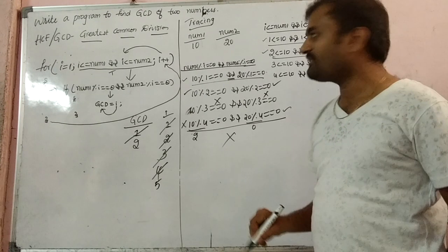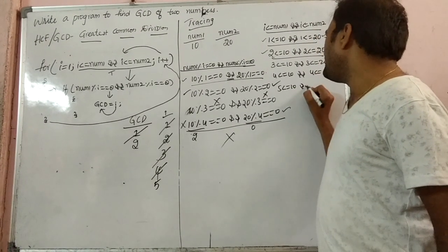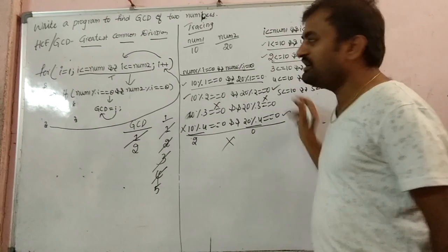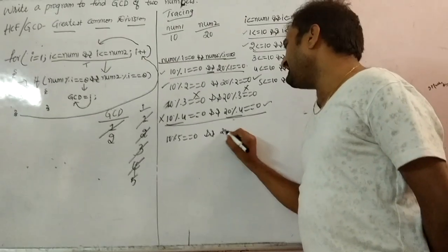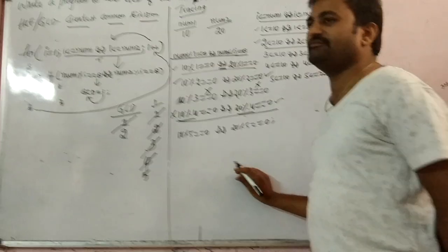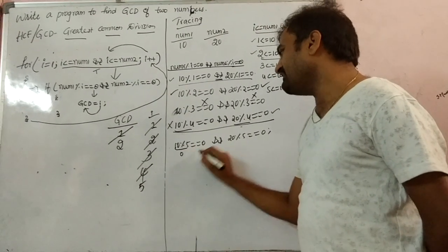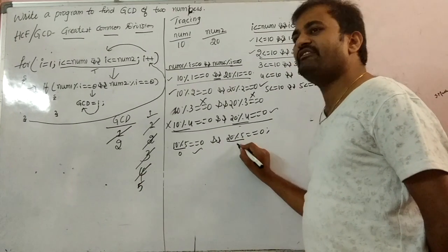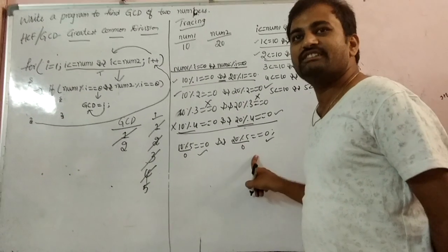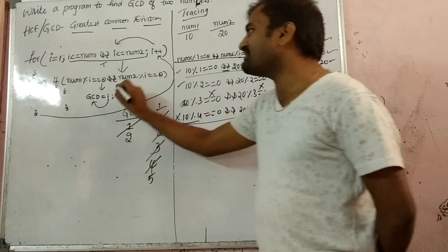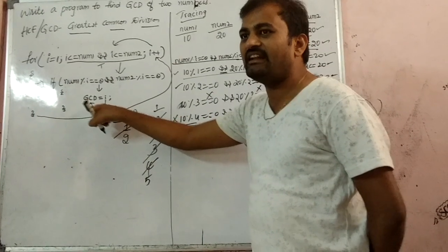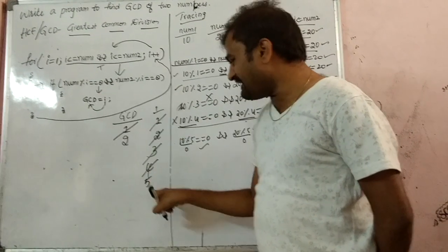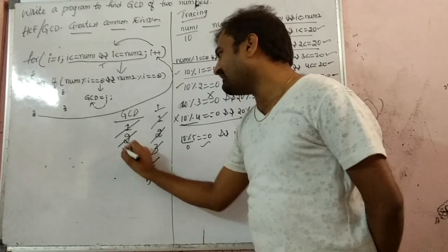Now i becomes 5. So 5 less than or equal to 10 AND 5 less than or equal to 20 — which is true. It has to enter into the for loop. In the for loop: 10 modulo 5 equals 0, and 20 modulo 5 equals 0. What is 10 modulo 5? 0 — so it is true. What is 20 modulo 5? 0 — it is also true. Both conditions are true, so the output is also true. It enters into the if condition statement: gcd equals i. What is i? 5. Now gcd becomes 5.